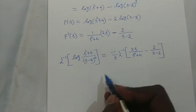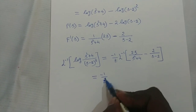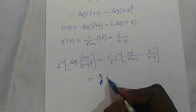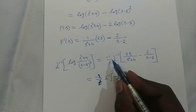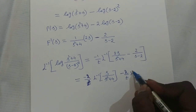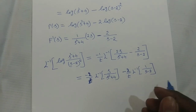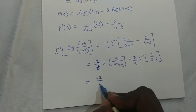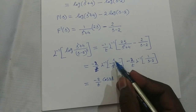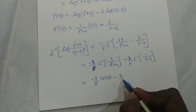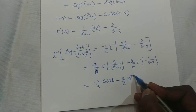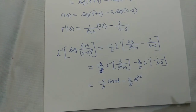Substituting into the property, L inverse of log((s² + 4)/(s − 2)²) equals minus 1/t times L inverse of F'(s), which is 2s/(s² + 4) minus 2/(s − 2). Splitting: minus 1/t times [2·L inverse of s/(s² + 4) minus 2·L inverse of 1/(s − 2)]. Since L⁻¹{s/(s² + a²)} = cos(at) with a = 2, and L⁻¹{1/(s − 2)} = e^(2t), the answer is minus(2/t)·cos(2t) minus (2/t)·e^(2t).